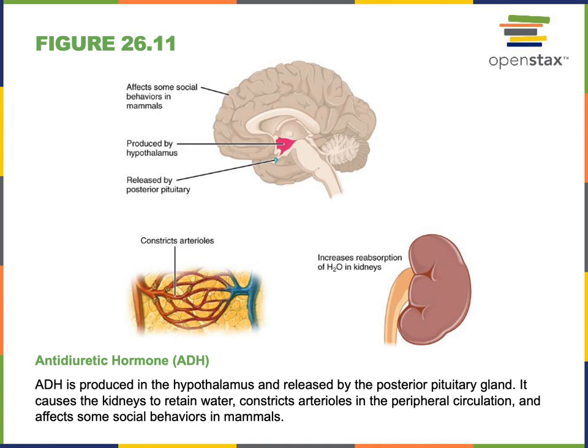Antidiuretic hormone has multiple effects through multiple target cells in different target organs, which are distinct from those of oxytocin. Oxytocin stimulates smooth muscle cells in the uterus to contract during childbirth, while antidiuretic hormone binds to receptors on kidney cells and blood vessel cells to stimulate water reabsorption and arteriole constriction. These actions work together to help the body deal with the stress of dehydration.